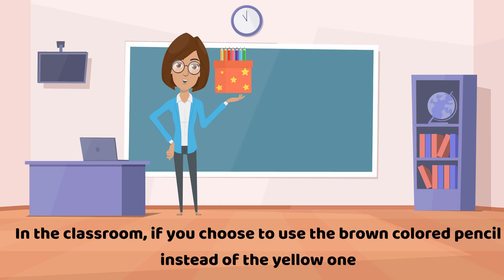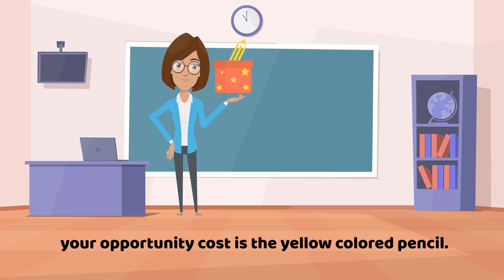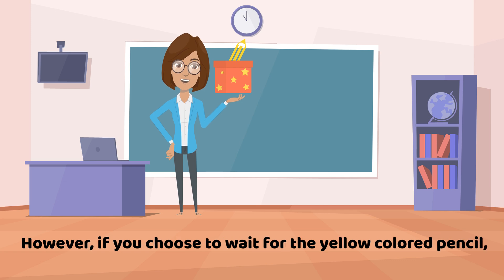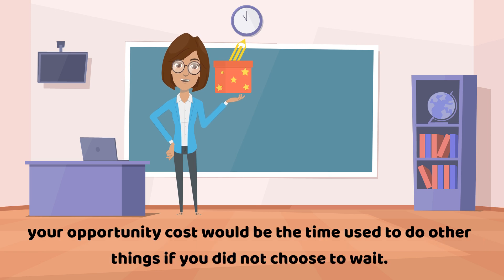In the classroom, if you choose to use the brown colored pencil instead of the yellow one, your opportunity cost is the yellow colored pencil. However, if you choose to wait for the yellow colored pencil, your opportunity cost would be the time used to do other things if you did not choose to wait.